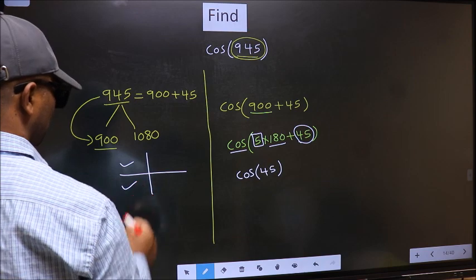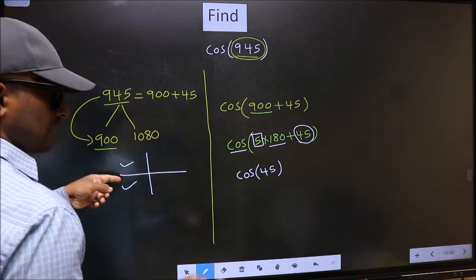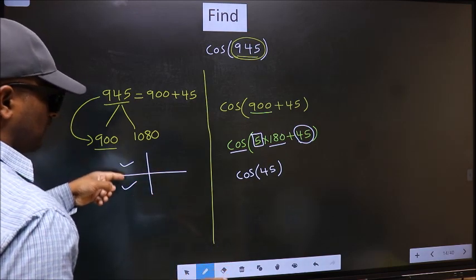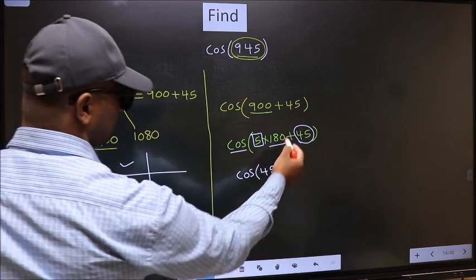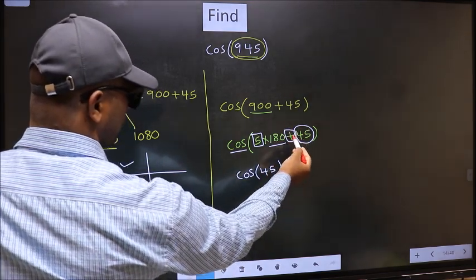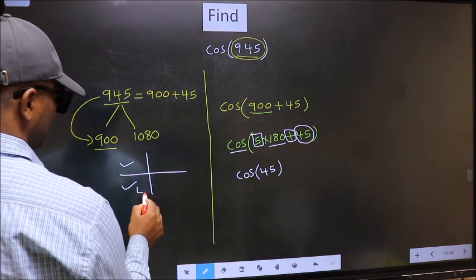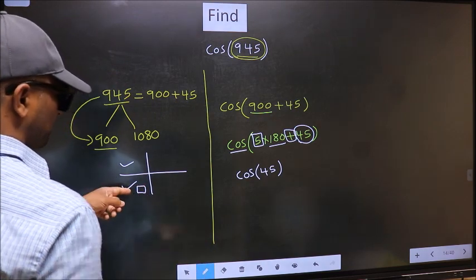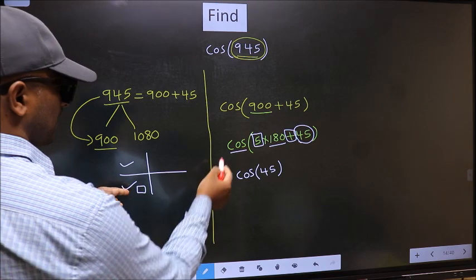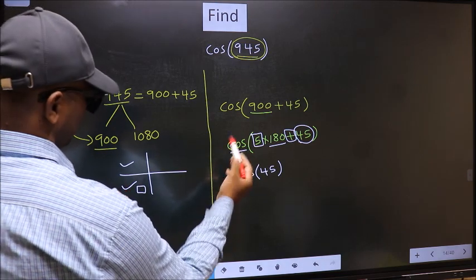So now to select the quadrant, we should look at this symbol. Here we have plus, that means the angle lies in the third quadrant. And in the third quadrant, cos is negative, so we should put negative.